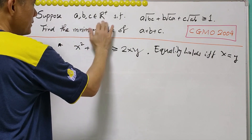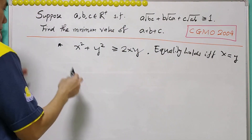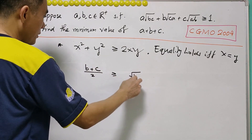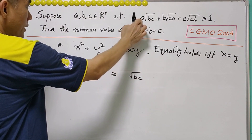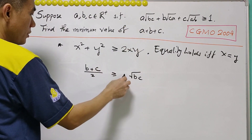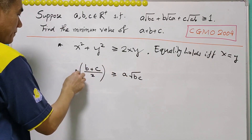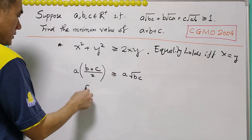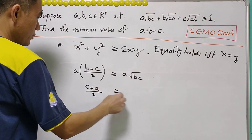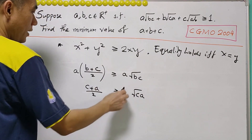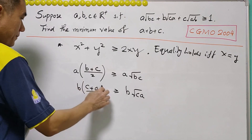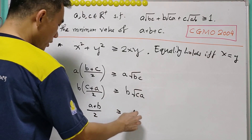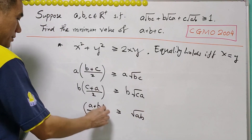Since A, B, C are positive real numbers, in order to get √(BC), we consider (B plus C) over 2 is greater than or equal to √(BC). And in order to get A times √(BC), we multiply both sides by A. Similarly, for B·√(CA), we have (C plus A) over 2 greater than or equal to √(CA), and multiply both sides by B. Likewise, (A plus B) over 2 is greater than or equal to √(AB), and multiply both sides by C.